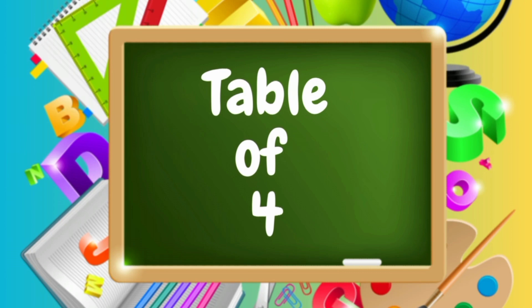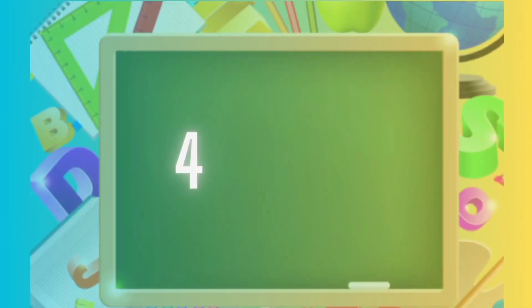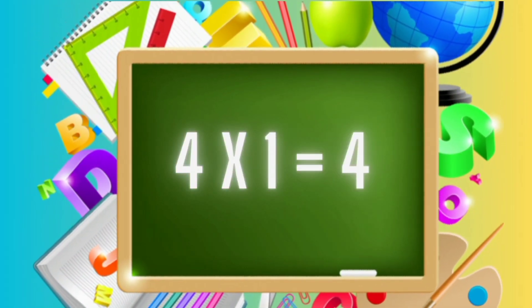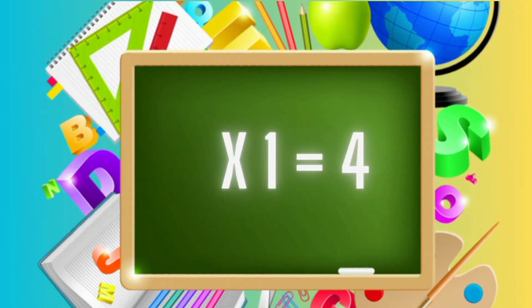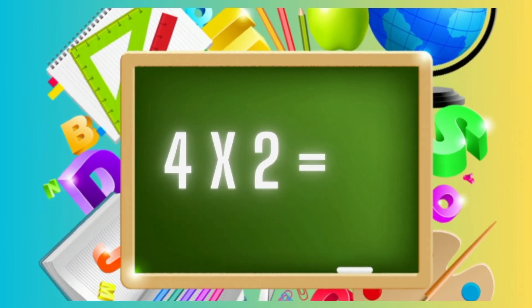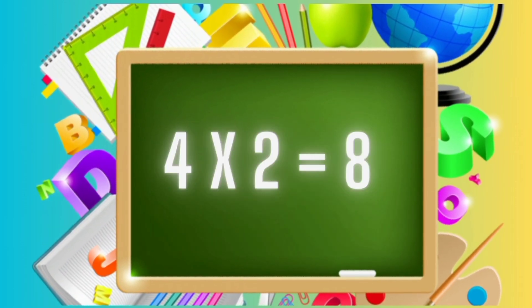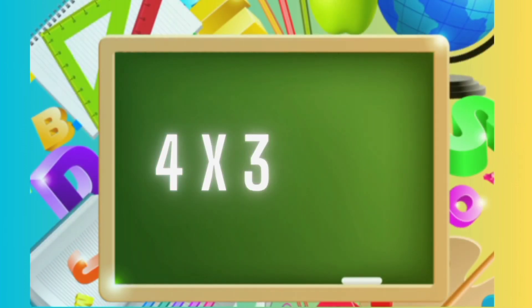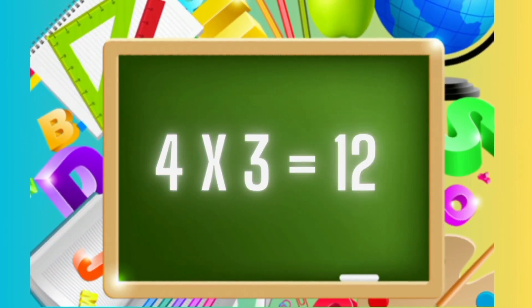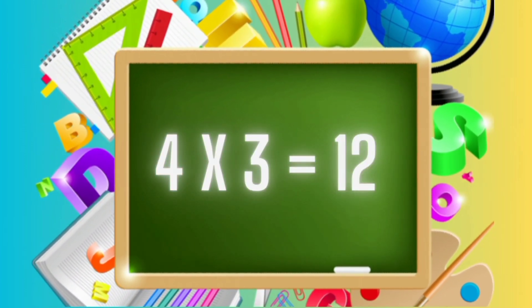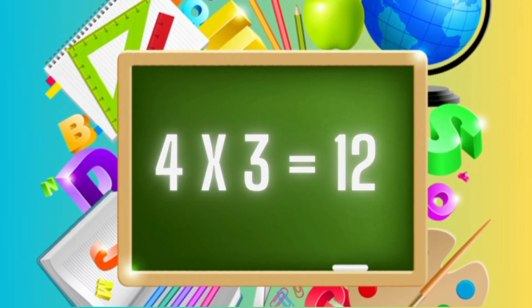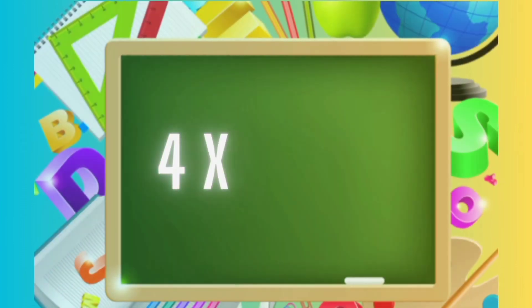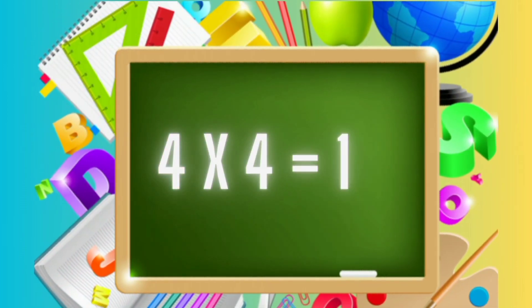Let's learn table of four. Four, one's a four. Four, two's an eight. Four, three's a twelve. Four, four's a sixteen. Four, five's a twenty. Four, six's a twenty-four. Four, seven's a twenty-eight. Four, eight's a thirty-two.